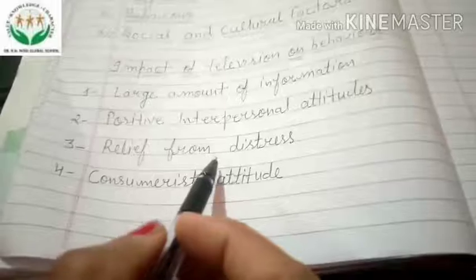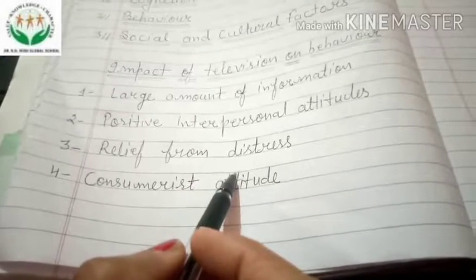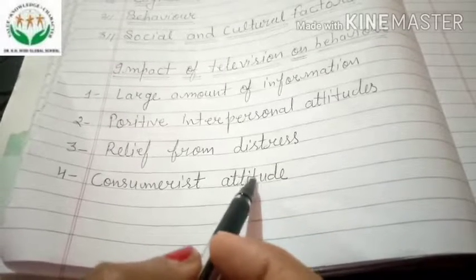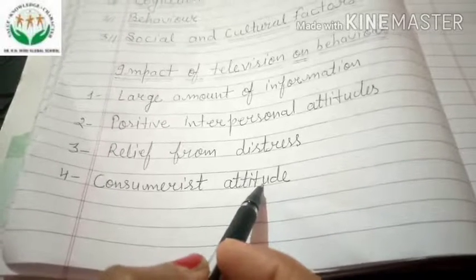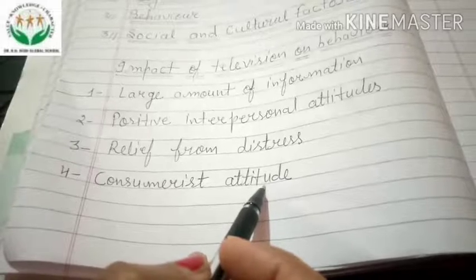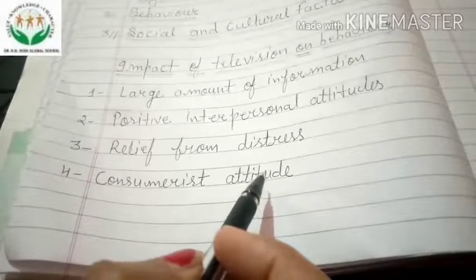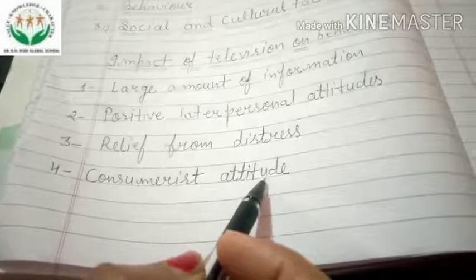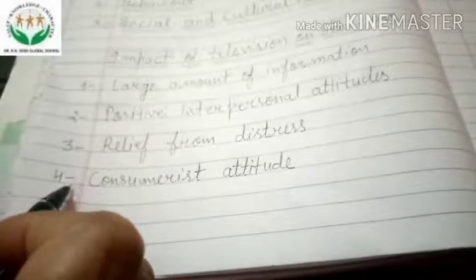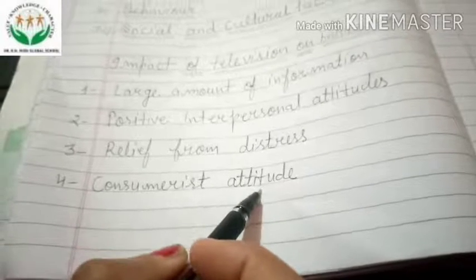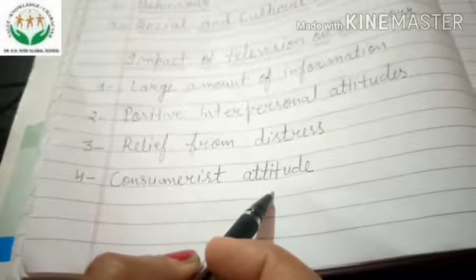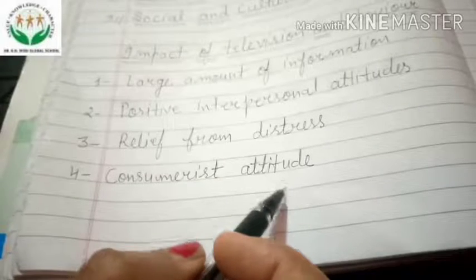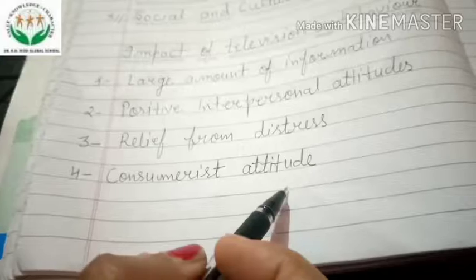The third effect is relief from distress. Research showed that watching violence on television was linked to greater aggressiveness in viewers; however, some other studies pointed out that merely watching violence does not make children more aggressive. Other findings show that watching violence may actually reduce the natural aggressive tendency of viewers — a process called catharsis. The last effect is a consumerist attitude. It is said that a consumerist attitude has developed due to television watching, as numerous products are advertised and it is very natural for the viewer to get carried away.